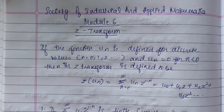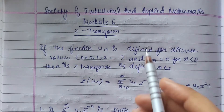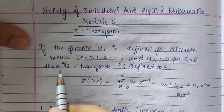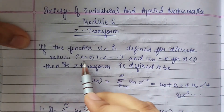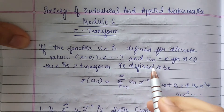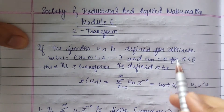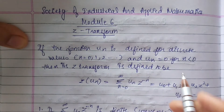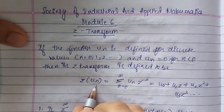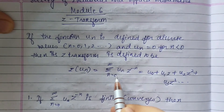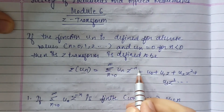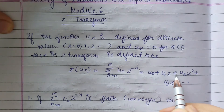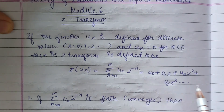Hey guys, I'm Sanjana Ghosh and today we are going to be starting the sixth module of our dy by dx series — the Z transform. If the function u(n) is defined for the discrete values n = 0, 1, 2, etc., and u(n) = 0 for negative values of n, then its Z transform is defined as Z{u(n)} = summation from n=0 to infinity of u(n) z^(-n), which equals u0 + u1*z^(-1) + u2*z^(-2) + u3*z^(-3) and so on.